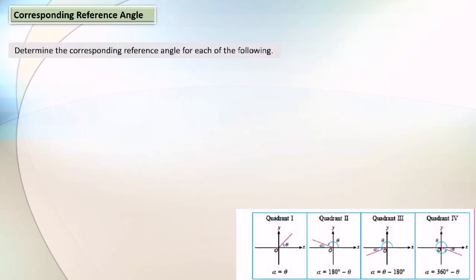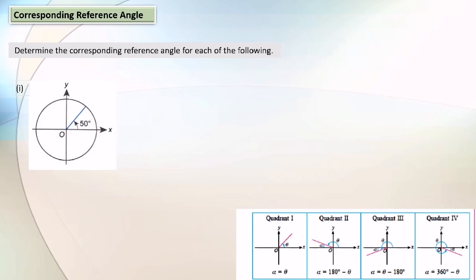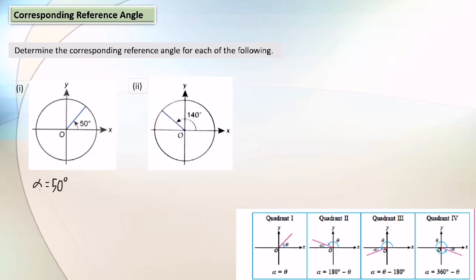Now we are going to determine the corresponding reference angle for each of the following. The first one: alpha equals 50 degrees. The second one, the angle is in quadrant 2. The corresponding reference angle always lies on the x-axis, so alpha equals 180 degrees minus 140 degrees, which equals 40 degrees.